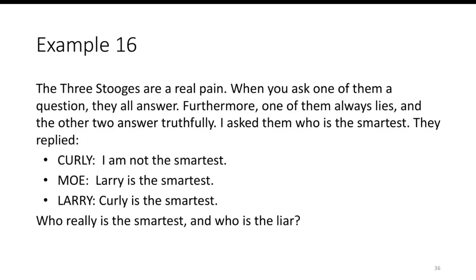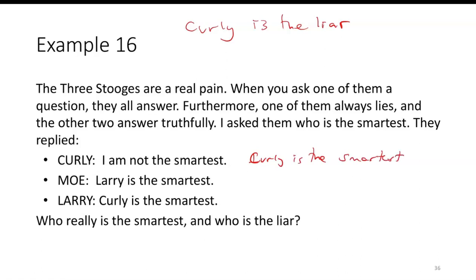Let's try to eliminate some possibilities. Suppose Curly is the liar. If he's lying, then Curly is really saying that he is the smartest. But that means Mo and Larry are both telling the truth, and Mo is saying that Larry is the smartest. Those both can't happen at the same time, so we can eliminate Curly as the liar.